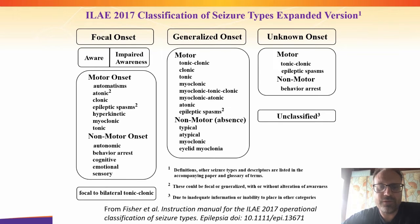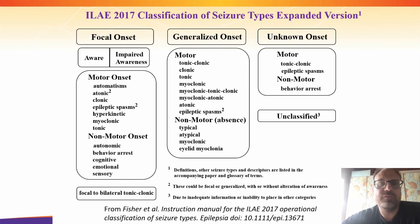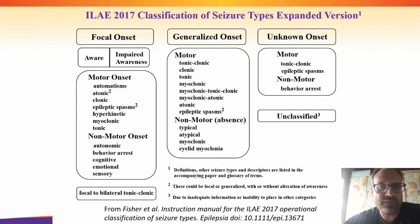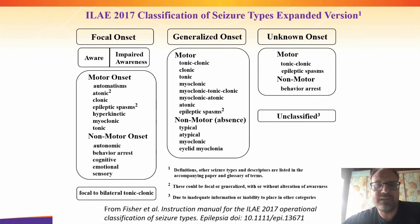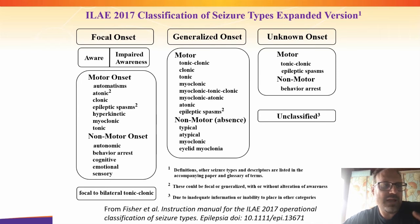Just a short correction: a spasm is longer than a myoclonus and shorter than a tonic seizure. Now, when we try to classify different types of seizures, we also look at where they start and how they propagate — this is based on the International League Against Epilepsy's classification from 2017. We try to determine whether the seizure has a focal onset, meaning it starts in one place in the brain and might spread, or a generalized onset, meaning both sides of the brain are engaged from the beginning. Then we look at the semiology to characterize the seizure type.